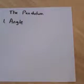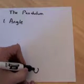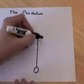So today we're going to look at the pendulum as an example of harmonic motion. A pendulum is composed of a mass, a string that holds the mass,